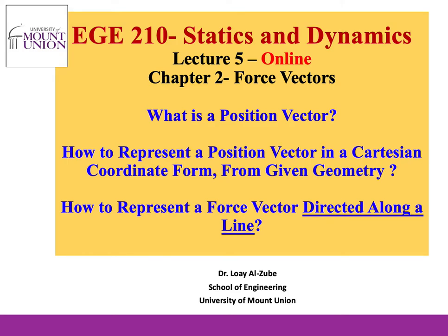In the previous lecture we learned how to represent a three-dimensional vector in Cartesian coordinate system using the i, j, k components in the x, y, and z axes, and we learned how to find the magnitude and coordinate angles for a three-dimensional vector. Keep in mind that we have two different sets of angles: projection angles and coordinate angles, and we're going to do multiple exercises and examples about how to find these in our in-person sessions. Also we learned about what is a unit vector and we talked about the projection angles and the coordinate direction angles and how to calculate them.